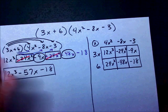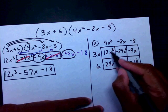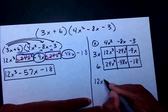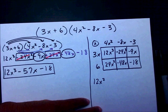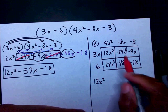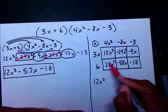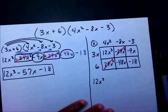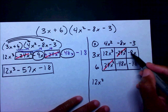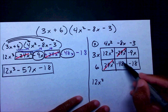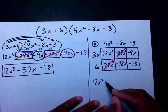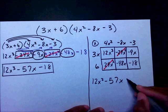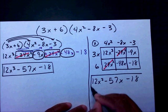I only have one x cubed, so I write 12x cubed. Negative 24x squared and positive 24x squared cancel each other out. Then negative 9x and negative 48x gives negative 57x, and negative 18 on the end. Same answer, different processes.